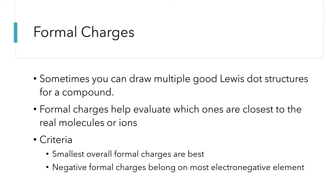Now we get to formal charges. There are times for compounds where you can draw multiple good Lewis dot structures for a single compound — they all follow the octet rule, they all seem to work well, and may just have lone pairs or multiple bonds in different positions. Formal charges will help us evaluate which one of those Lewis dot structures is closest to the representation of the real molecule.